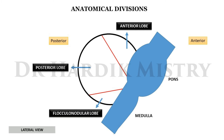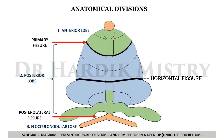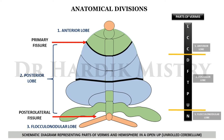Anatomically, the cerebellum is divided into three lobes: anterior lobe, posterior lobe, and flocculonodular lobe. These lobes are separated by the primary fissure and the posterolateral fissure. The primary fissure separates the anterior lobe from the posterior lobe; the part below the posterolateral fissure is the flocculonodular lobe.